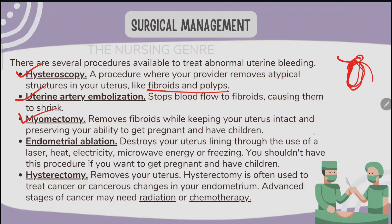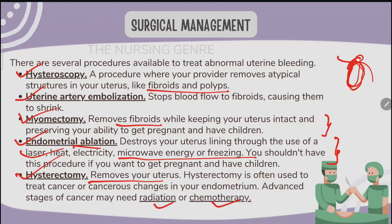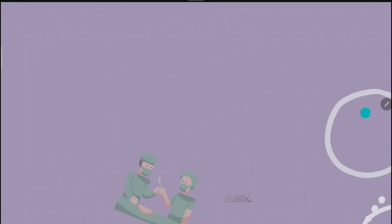Myomectomy removes fibroids while keeping your uterus intact, preserving your ability to get pregnant. Endometrial ablation destroys your uterus lining through the use of laser, heat, electricity, microwave energy, or freezing — you should not have this procedure if you want to get pregnant. Hysterectomy is the removal of the uterus, often used to treat cancer or cancerous changes in the endometrium; advanced stages of cancer may also require radiation or chemotherapy.